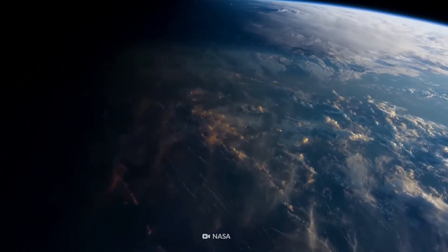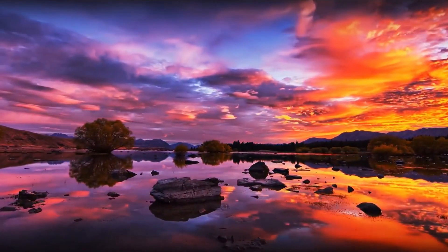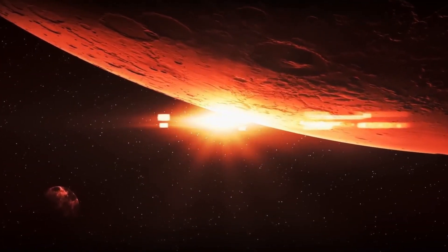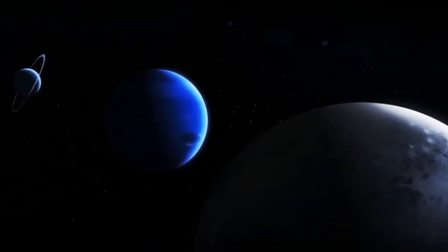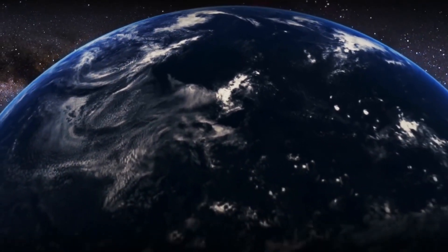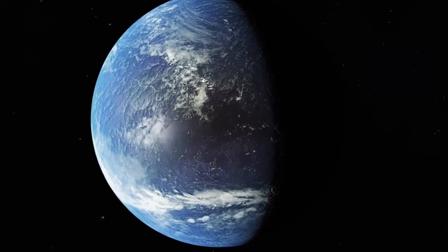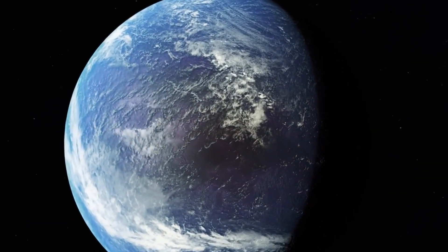The Terminator Zone, the thin strip delineating the demarcation between perpetual light and darkness, offers a realm of possibilities for life's sustenance. Within this twilight region, where opposing extremes converge, conditions might prove conducive for life to thrive, drawing sustenance from the delicate equilibrium between light and darkness. The enigmatic nature of Speculoos 2c beckons further scrutiny and exploration to unravel the mysteries veiled within its celestial dance.